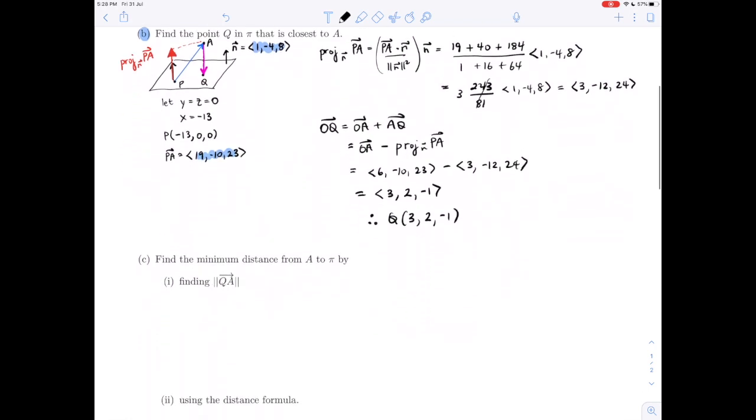Next we are asked to find the minimum distance from the point to the plane. We're asked to do it in two different ways. First by finding the norm of vector QA. The vector QA is the projection vector, so the norm of the projection of PA onto N. That's ||3(1, -4, 8)||. The 3 I can bring outside in absolute value. This gives 3√(1 + 16 + 64) = 3√81 = 3(9) = 27. So the distance from point A to the plane is 27 units.